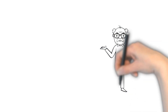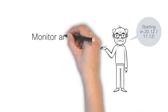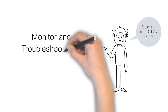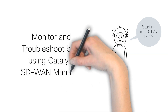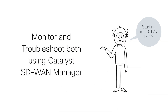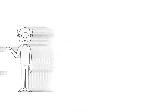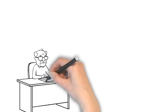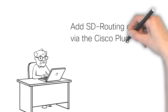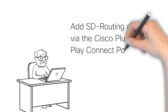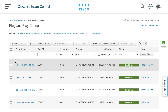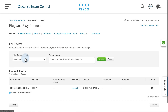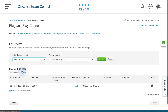No worries, because starting with 20.12/17.12 software, you can now monitor and troubleshoot both parts of the network in a single place using SD-WAN Manager, formerly vManage. With a few clicks in Cisco Network Plug and Play, we can specify the mode for our devices as you see here.